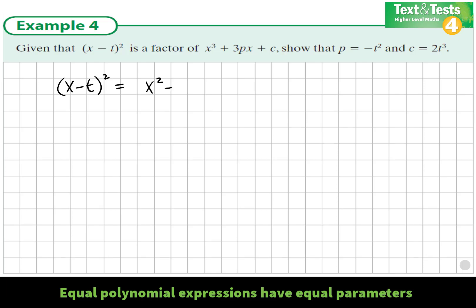Let's expand (x - t)² first. Square the first part, that's x². Multiply the two things and double it, that's -2tx. Square the second thing, that's +t².